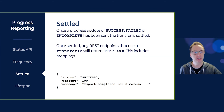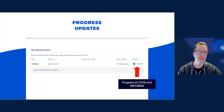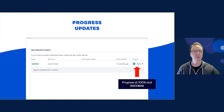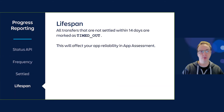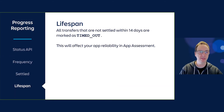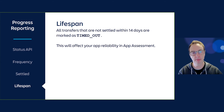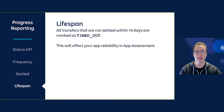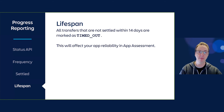In the user interface, once complete it shows 100% with a green tick. All transfers that are not settled within 14 days are marked as timed out, which will affect your app reliability and app assessment. So it's really important during testing that you always send a success or incomplete status update with 100% completion in order to keep your app reliability as high as possible.